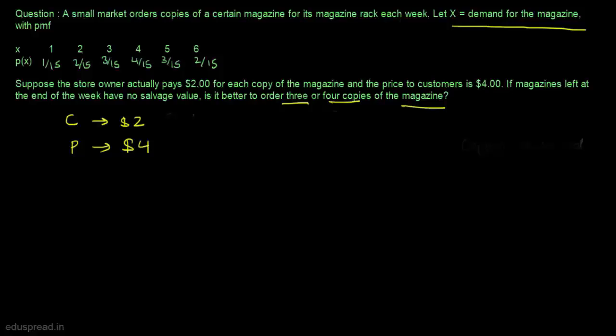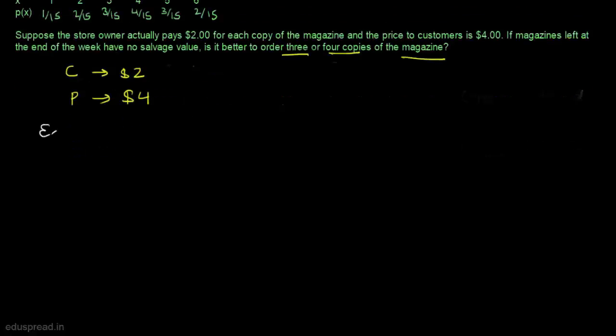Let's take it step by step. First, we will calculate the expected net revenue if the store owner orders 3 copies of the magazine. Then we will calculate the expected net revenue if he orders 4 copies. Once we have these two values, we can simply compare them to see which one is greater.